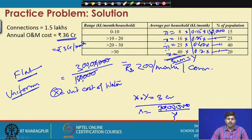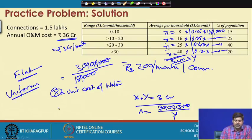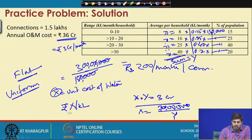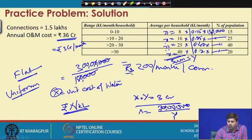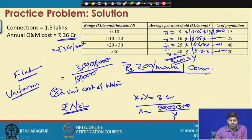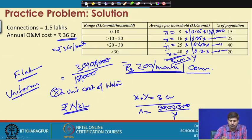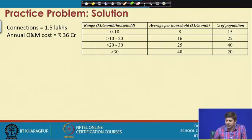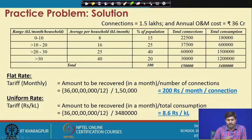So our uniform pricing model says: charge each user at rupees x per kL. In flat pricing we got 200 rupees per month per customer; in the uniform price system we charge each user at rupees 8.6 per kL. That is the calculation for flat rate and uniform tariff models.